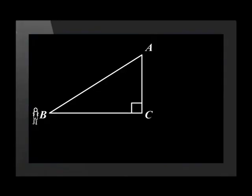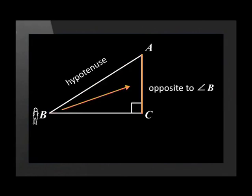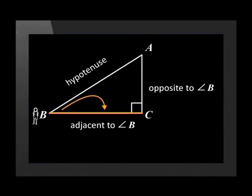Picture yourself standing at angle B. The first side we can label is the hypotenuse — it is always opposite the right angle. Side AC is opposite to angle B; we will call that side the opposite side of angle B. Side BC is next to or adjacent to angle B; we will call side BC the adjacent side to angle B.